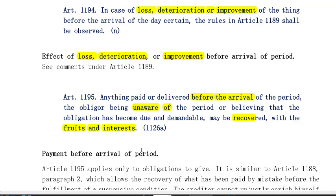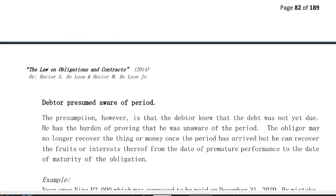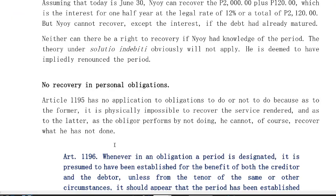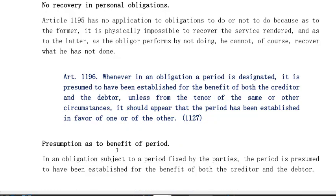If the debtor paid voluntarily knowing that the obligation is not yet due, most likely he could not recover what he has paid because he is aware that the obligation is not due. However, if the payment has earned some interest or fruits, he may recover those fruits and interests even if payment was made prior to the arrival of the period. That is the brief summary under Article 1195.